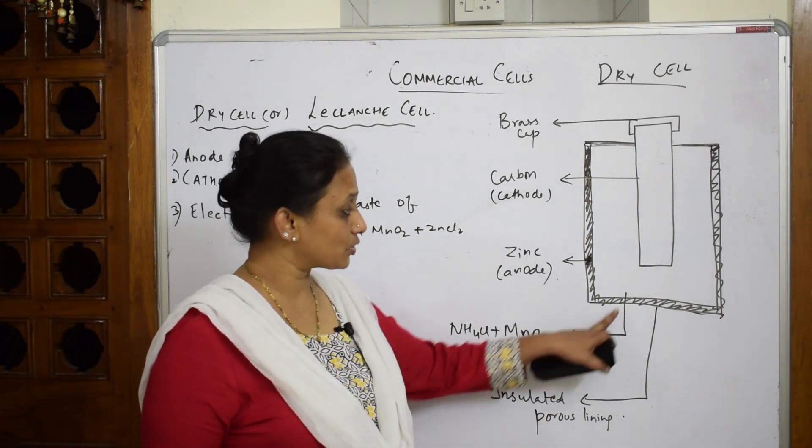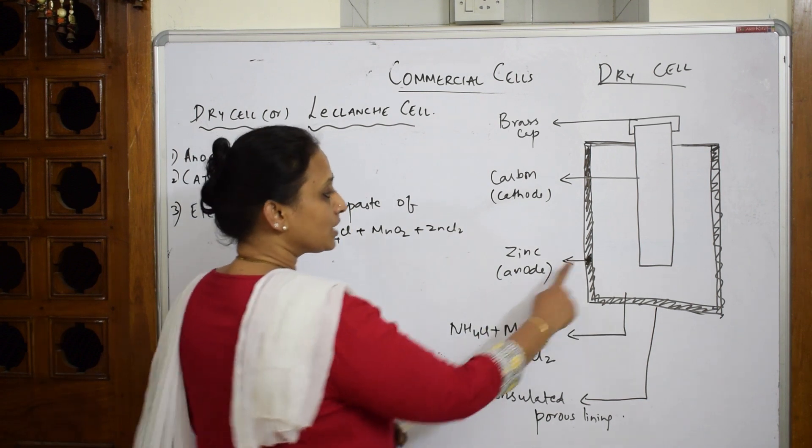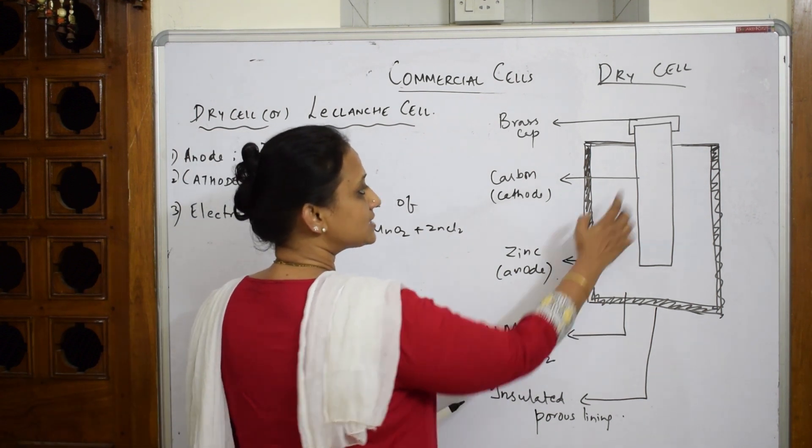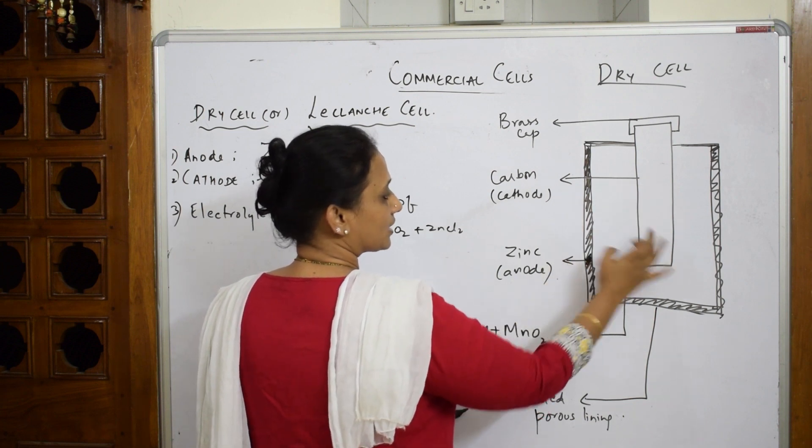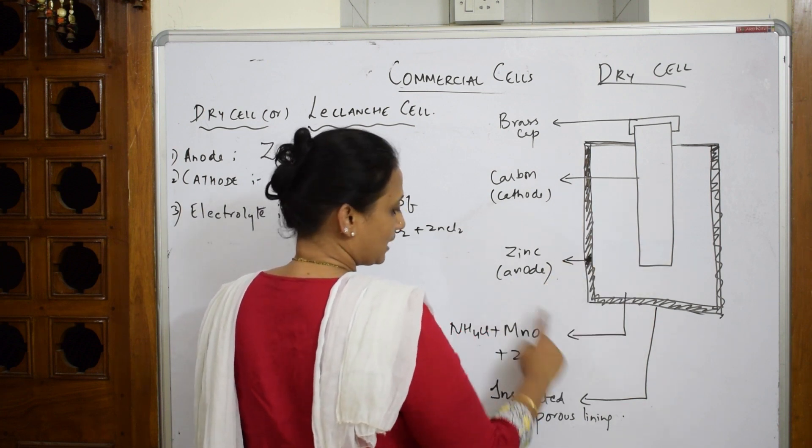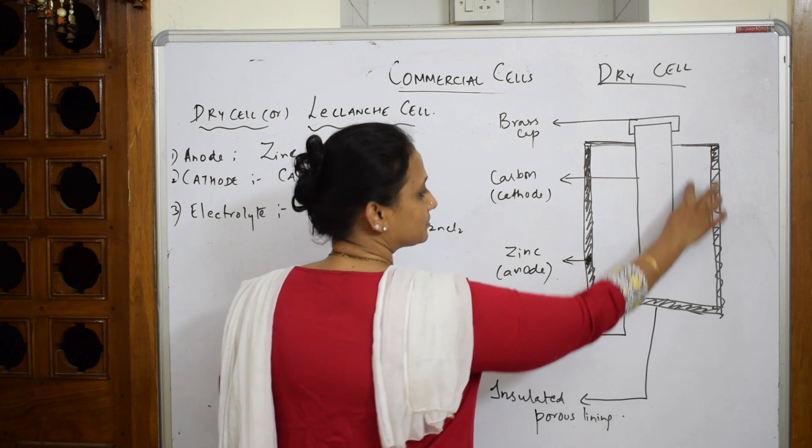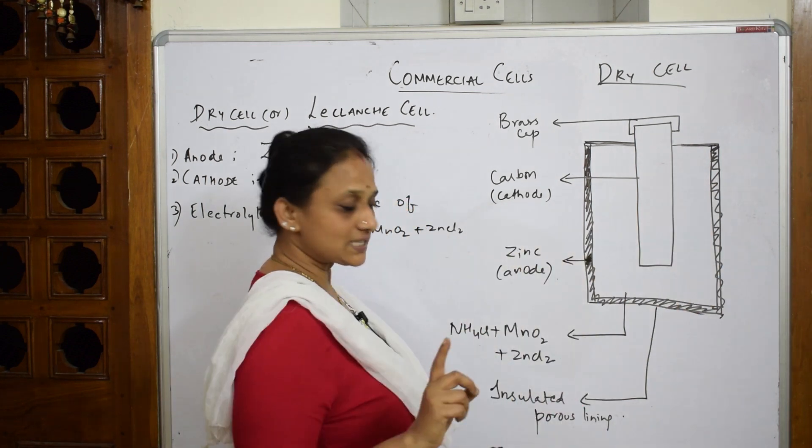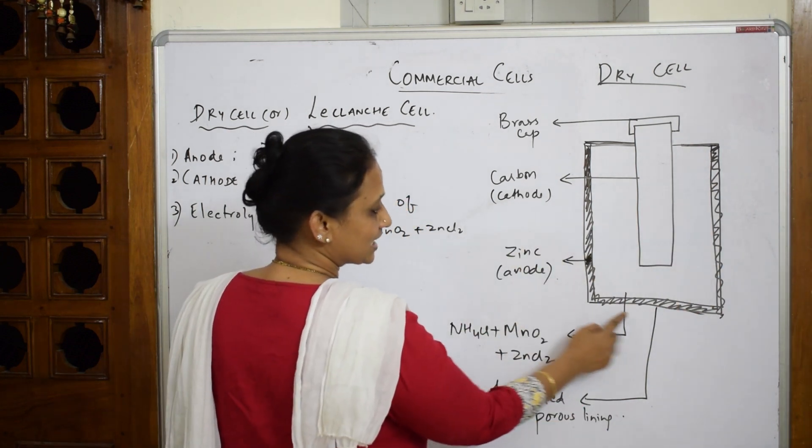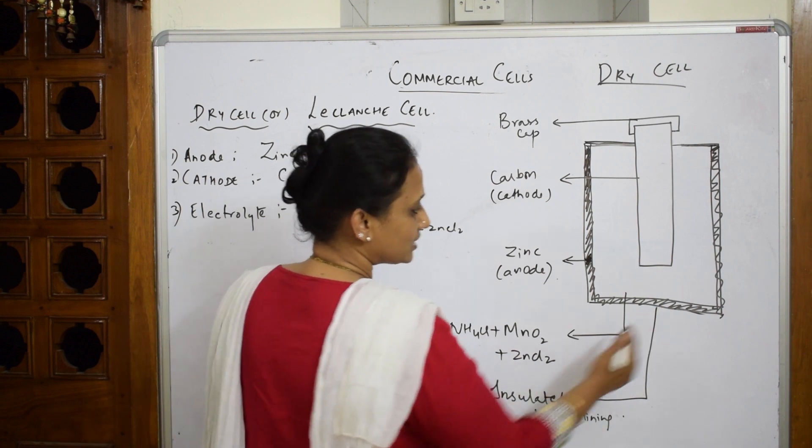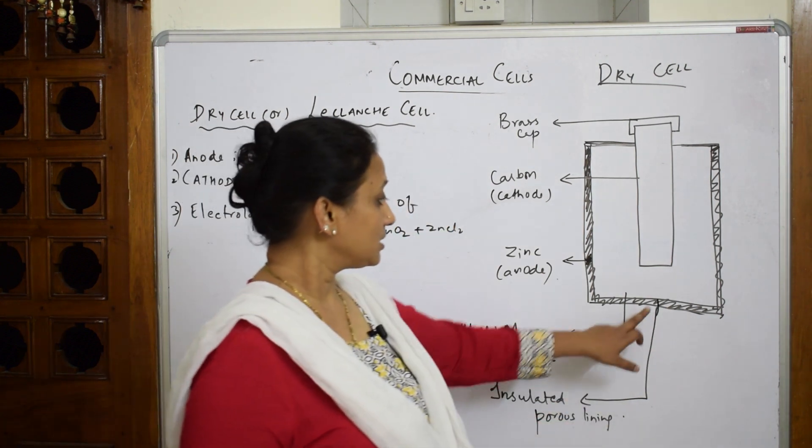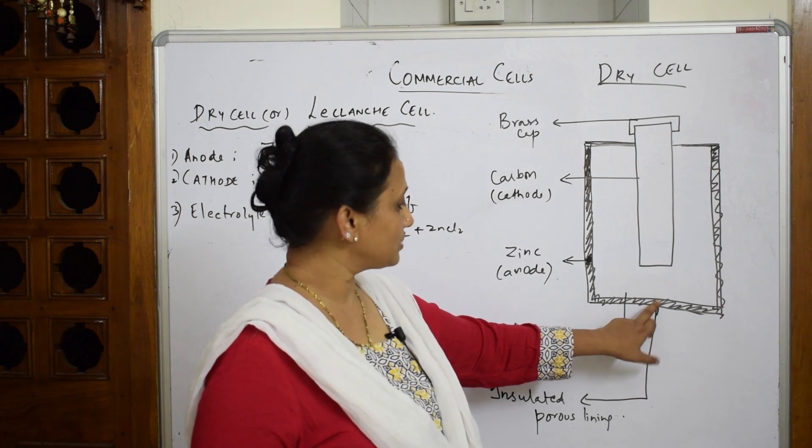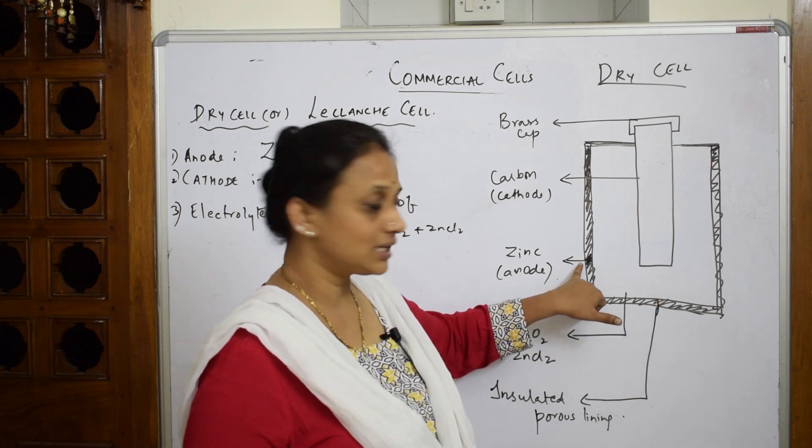Now what is the role of the insulated porous lining? Observe carefully, this is your anode and inside you have carbon graphite cathode. Between these two you have an electrolytic paste filled here. This insulated porous lining, this inside one, is acting as a salt bridge.